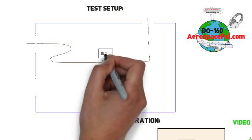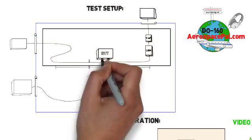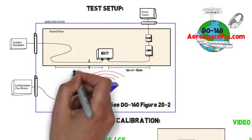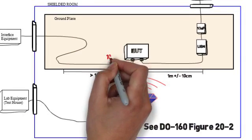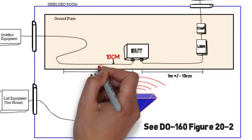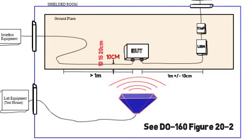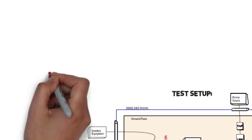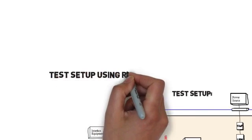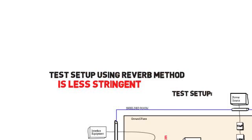The test setup for radiated susceptibility gets very specific if you're using the anechoic chamber method. The diagram shown here indicates the first bundle is exactly 10 centimeters away from the edge of the bench. If you have multiple bundles routed in one direction, space the subsequent bundles 5 centimeters from each other going towards the back of the bench. If testing using the reverb method, cables should be routed in the bundles specified by the aircraft wiring harness; however, the location of routing does not matter as long as it's within the uniform field.